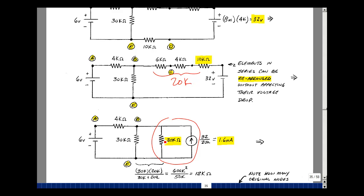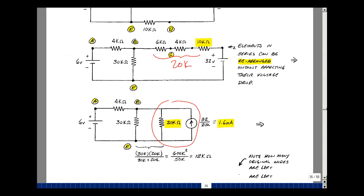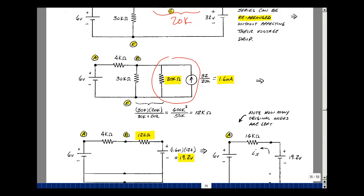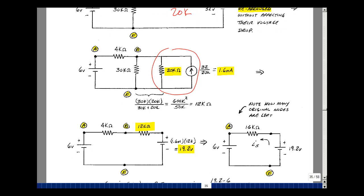Now, what I've got is a 20K in parallel with a 30K, and I can take the product over the sum, and it turns out to be 12K in this case, and I could take that combination and convert it to a voltage source in series of the resistance. So I'll take the 12,000 ohms, multiply that by the 1.6 milliamps, and you get 19.2 volts,